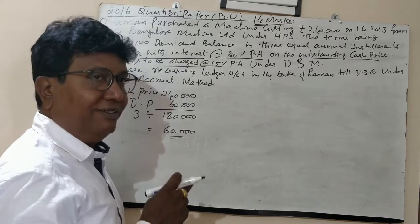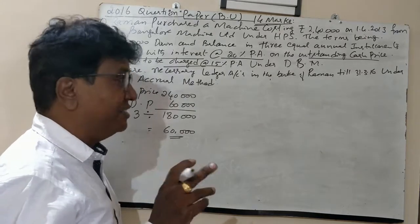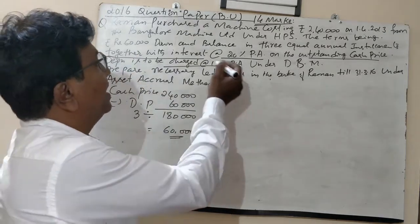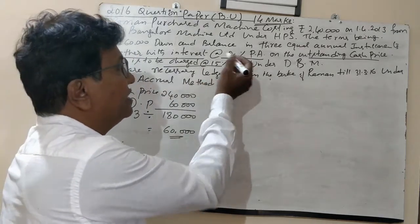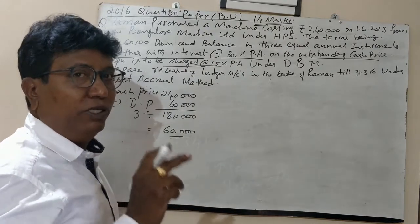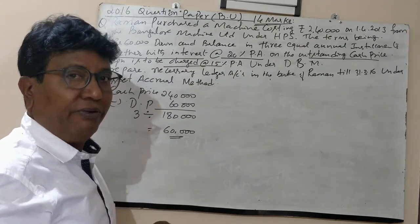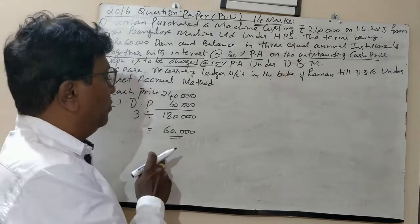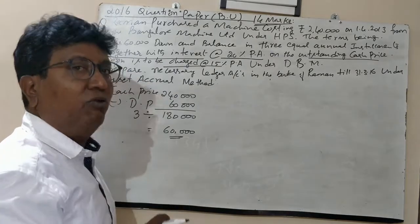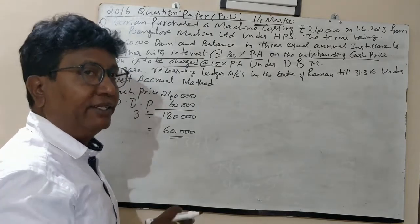Since interest is not included in the installment and the rate of interest is given, this is called the second method, as I showed in my first video. Now let us find out how to calculate interest.